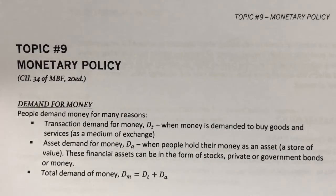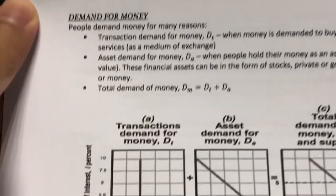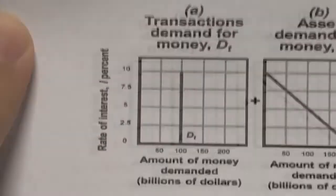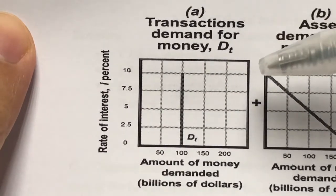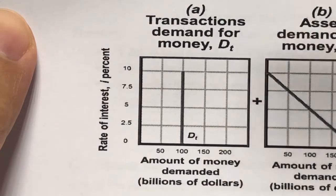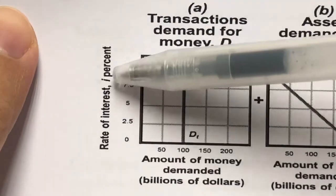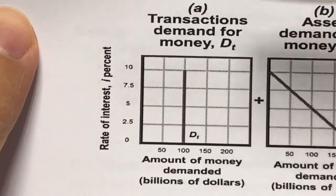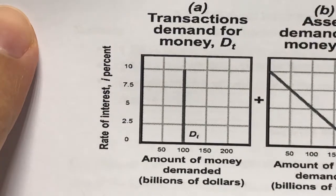Let's take a look at how the demand for money looks like, focusing first on the transaction demand for money. The transaction demand for money is vertical. This is because people demand money to buy goods and services not because of the interest rate. Rather, people buy goods and services depending on their level of nominal GDP or nominal income.